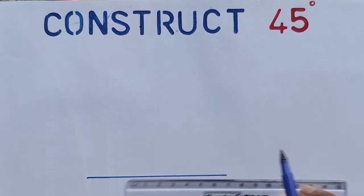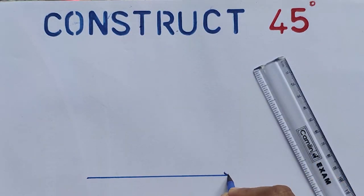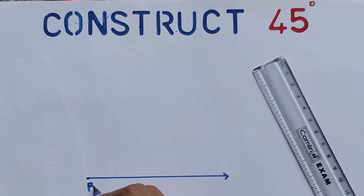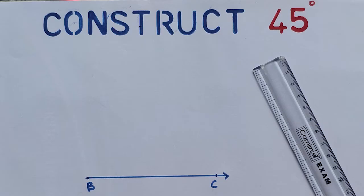For that, we have to draw a ray. The name of that ray is BC. Then place the metal tip on B, take a radius, and draw an arc. It intersects BC at L.